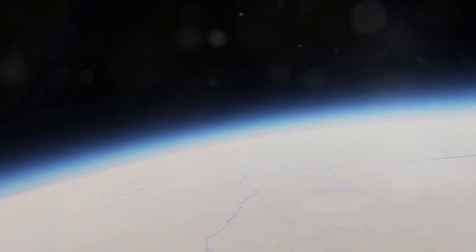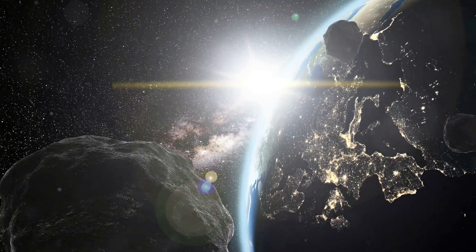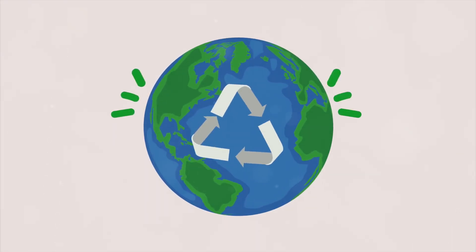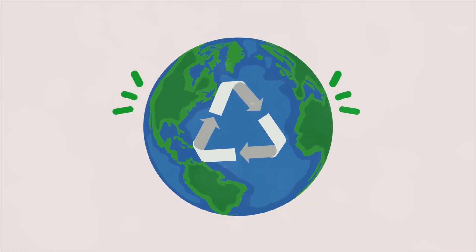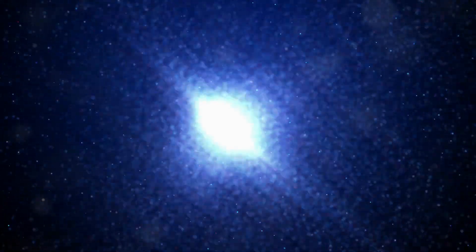Earth's fragile shield. Our atmosphere protects us from most gamma rays. The ozone layer, in particular, absorbs a lot of this harmful radiation. But a powerful GRB could still be dangerous.